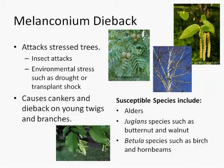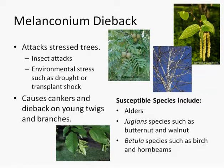Melaconium dieback can attack stressed trees. Stresses can include insect attacks and environmental stress, such as drought or transplant shock. This pathogen will cause cankers and dieback on young twigs and branches of the stressed tree.